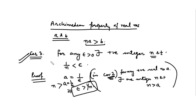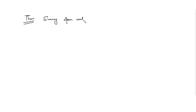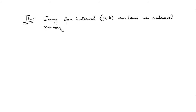We will use this corollary in the proof of the theorem that between two real numbers there lies a rational number. Moreover, every open interval contains a rational number — in fact, infinitely many rational numbers. So this says that every open interval (a, b) contains a rational number.